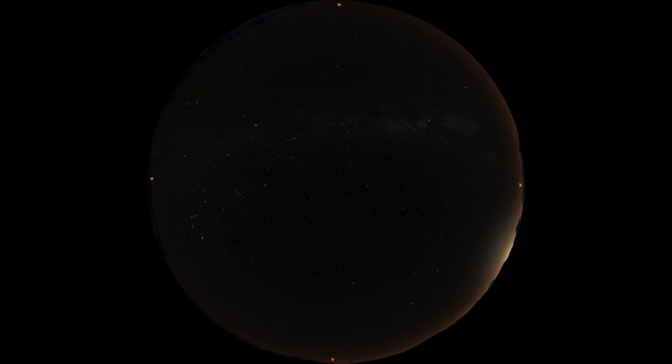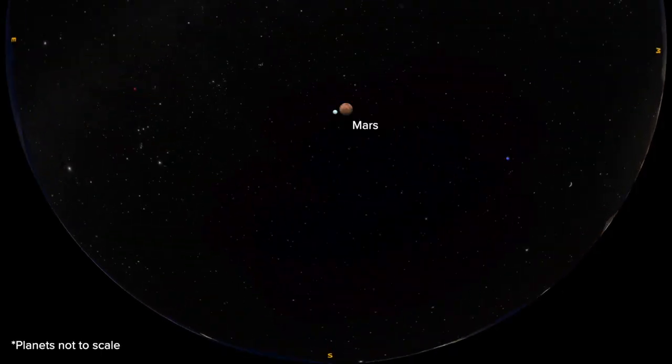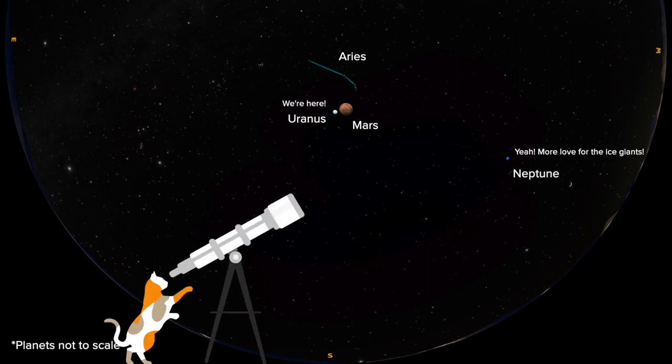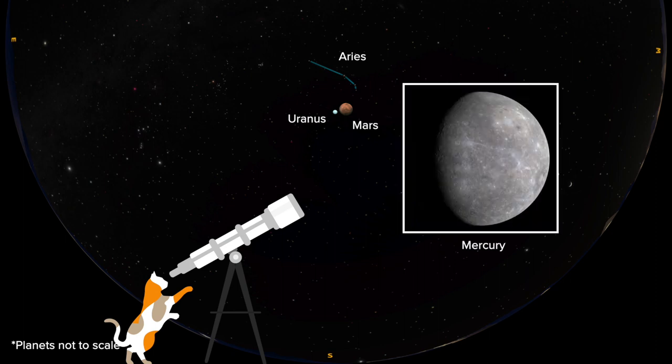For planets this month, Mars is front and center, high in the south next to Aries. Uranus and Neptune are out as well, but you will need a telescope to find them. And in the second half of the month, you might be able to spot Mercury just above the southwestern horizon right after sunset.